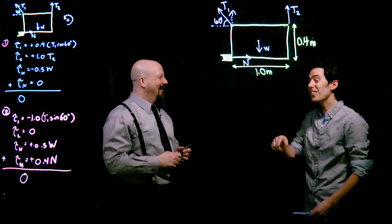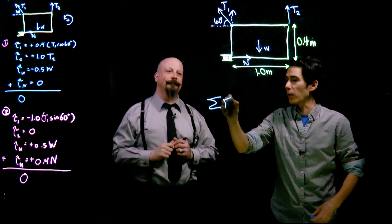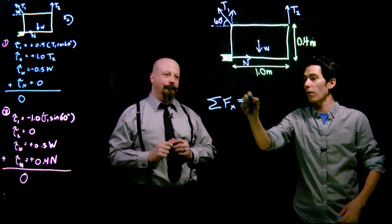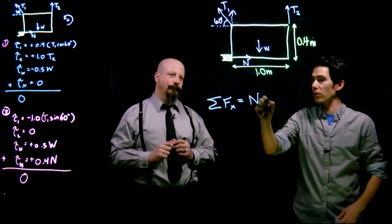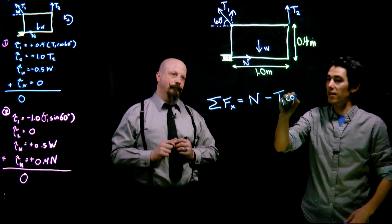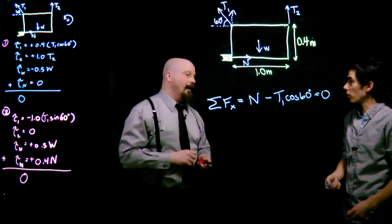We can still come back to what we did previously with the sum of the forces being zero. It's not going anywhere. So the sum of the forces in the x direction, that is going to involve the normal force in the positive x direction, and we're going to have T1 cos of 60 in the negative x direction, and those are going to sum up to zero. So there's one of the two equations.